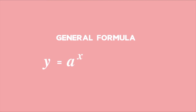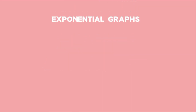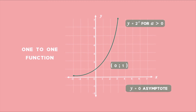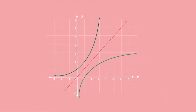Exponential functions have the general formula y equals a to the power of x, for a greater than zero. Exponential graphs can be recognized by their shape, y-intercept, and horizontal asymptote. For example, y equals 2 to the x has a y-intercept of 1, increases exponentially for positive x, and for negative x approaches y equals zero — the x-axis — as its horizontal asymptote, but never touches it. The exponential function is one-to-one, so its inverse will also be one-to-one. We find the inverse by reflecting over the line y equals x.